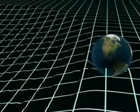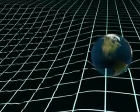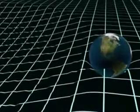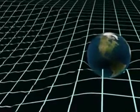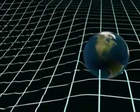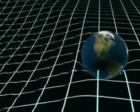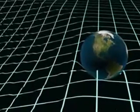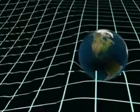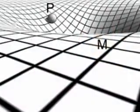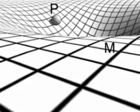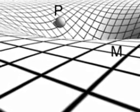Predicted in Einstein's General Theory of Relativity, gravitational waves are disturbances in the curvature of spacetime caused by the motions of matter. Propagating at or near the speed of light, gravitational waves don't really travel through spacetime — it's the fabric of spacetime itself that's oscillating. Although gravitational waves pass straight through matter, their strength weakens proportionally to the distance traveled from the source.